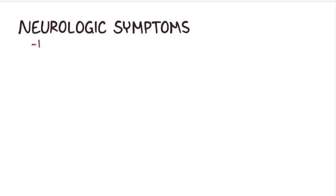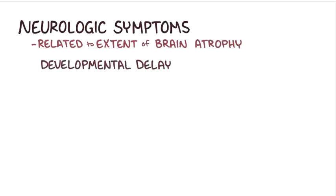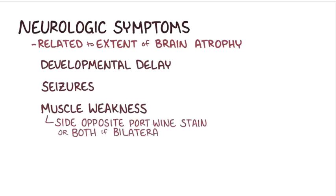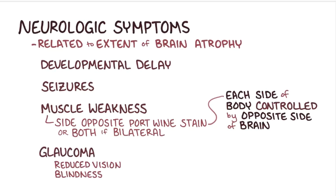Neurologic symptoms of Sturge-Weber syndrome are related to the extent of brain atrophy, and they include developmental delay as well as seizures and muscle weakness on the side opposite of the port wine stain, or on both sides if the disease is bilateral. This is because each side of the body is controlled by the opposite side of the brain. Some individuals also develop glaucoma, which can cause reduced vision or even blindness in the affected eye.